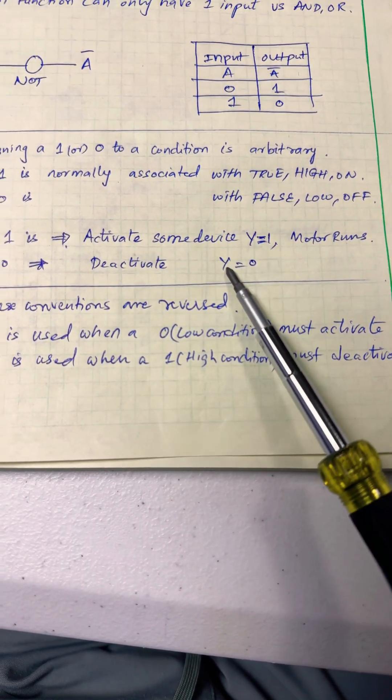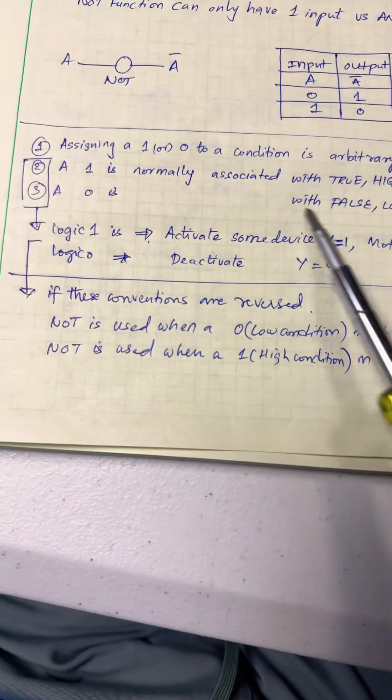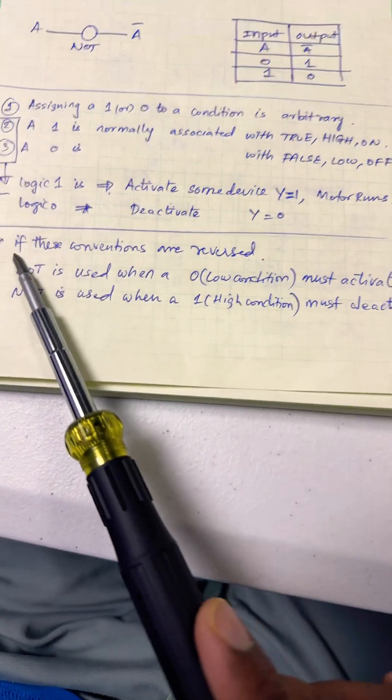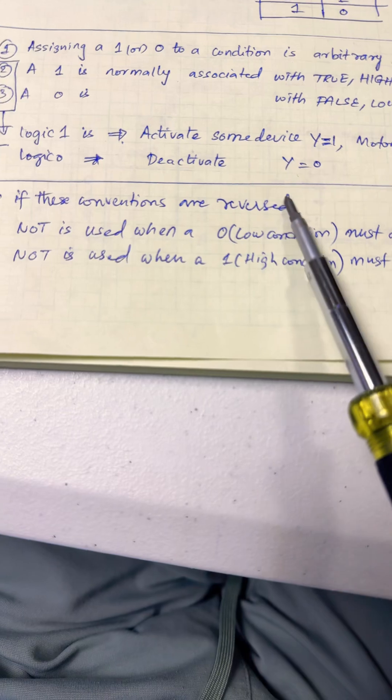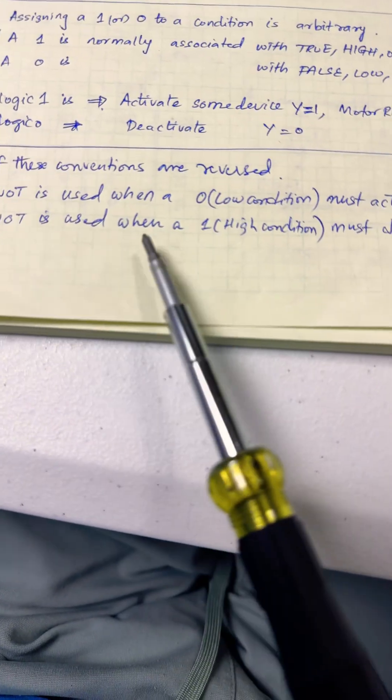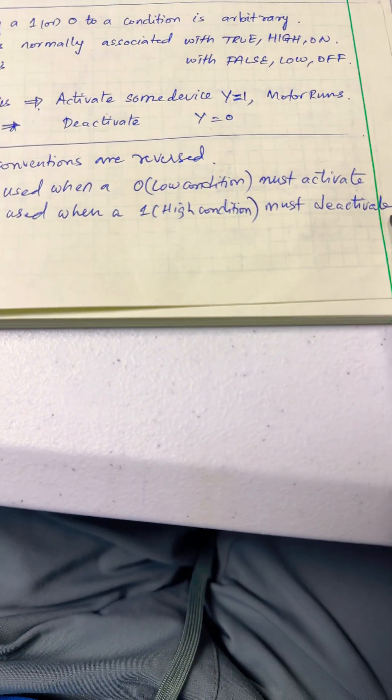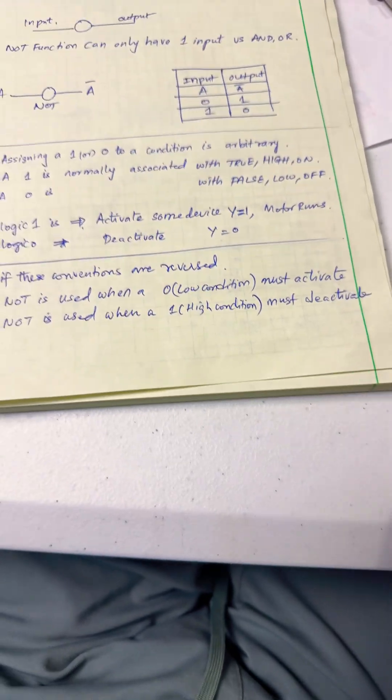This is where NOT comes into picture. If you had to change from a conventional direction to a reverse direction, that's where NOT is used. NOT is used when a low condition must activate something, and when a high condition must deactivate something.